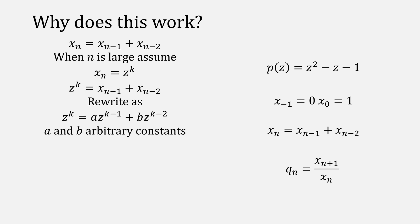In fact, once k gets really large, they're not going to matter very much and we can simplify it to just be z to the k is equal to z to the k minus 1 plus z to the k minus 2.